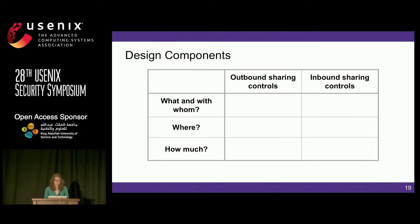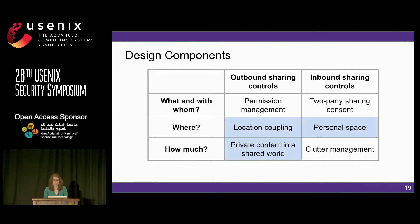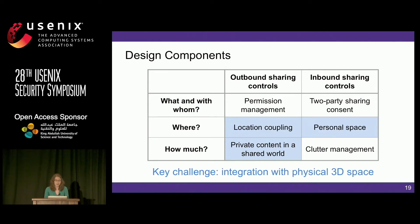We break down our design components along two major dimensions: first, the locus of control, and second, the type of control. For locus of control, we have outbound sharing controls, pertaining to how content belonging to one user is shared with other users, and inbound sharing controls, pertaining to how a user's reality is augmented by content from other users. For type of control, we have what and with whom an object is shared, where it is shared, and how much information from that object is shared. The design points highlighted in blue are where there is the biggest gap between existing technologies and the requirements of the AR setting—they all hinge on the tight integration of virtual content with users' physical 3D space.